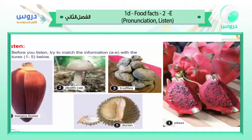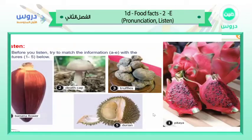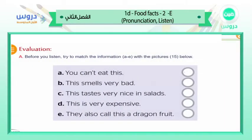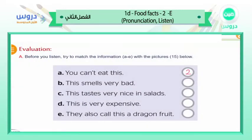Let's go back to the matching sentences. A — 'you can't eat this.' Which one can't you eat? They are dangerous. Excellent — number two, the death cap. If you wrote number two it's correct; if not, correct it now. B — 'this smells very bad.' Which one smells very bad? Excellent — number five, durian. So B goes with number five.